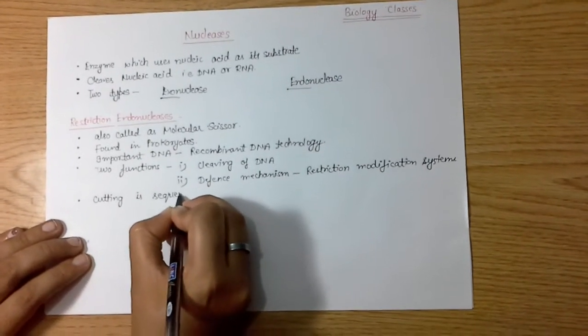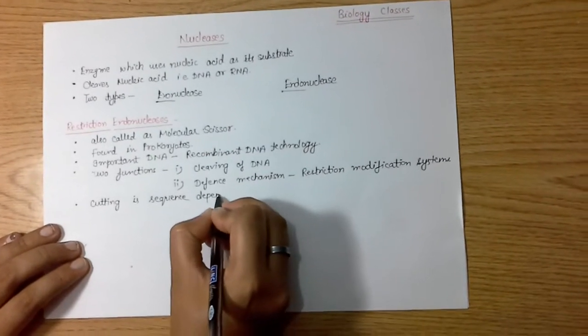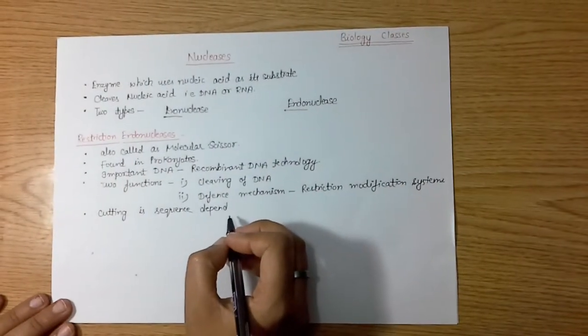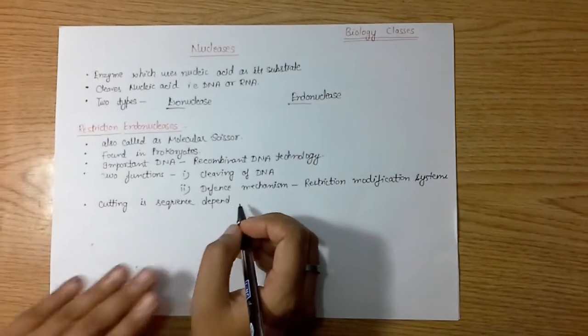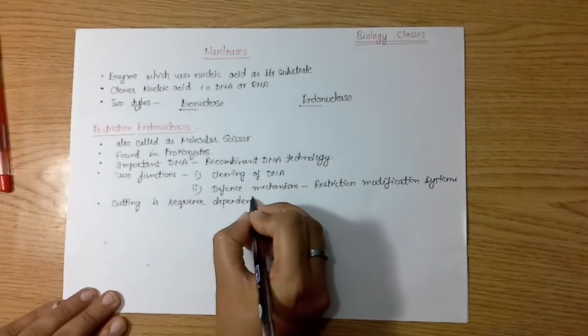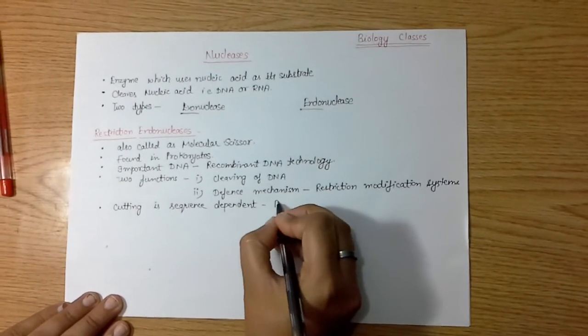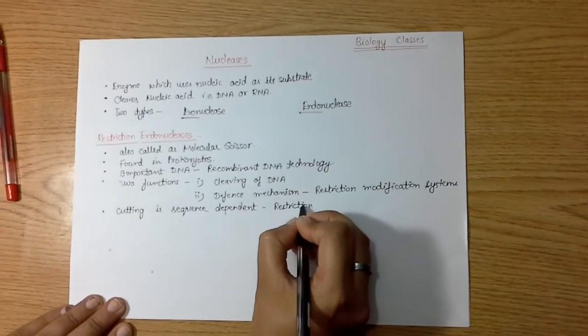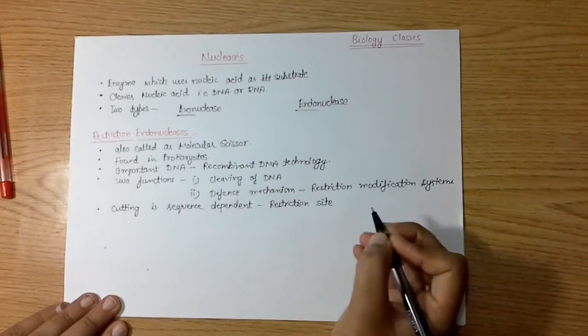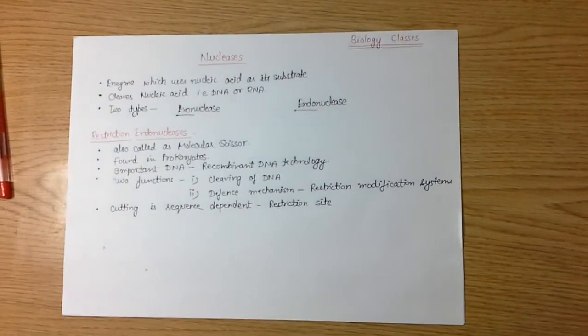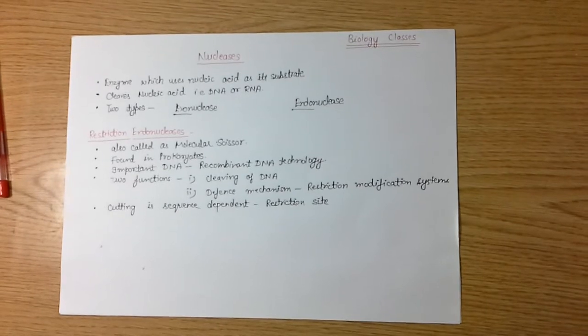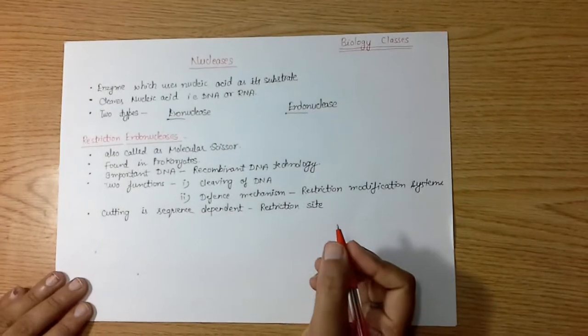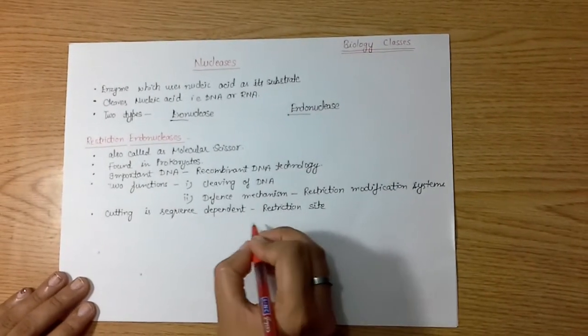Cutting by restriction enzyme is sequence dependent, which means they have a particular site or a particular sequence where the restriction endonuclease works by its cleaving nature. So this site is known as a restriction site.